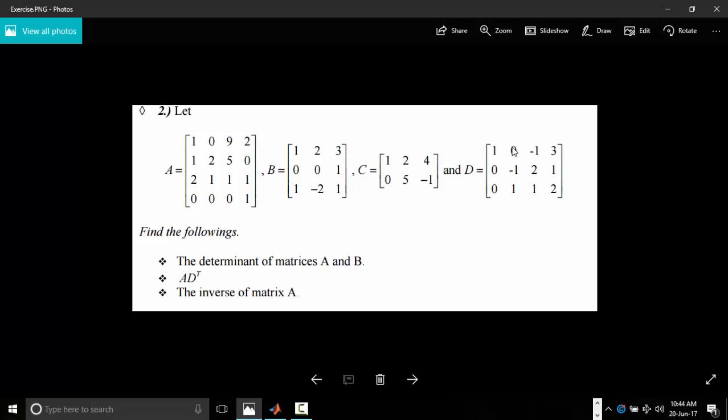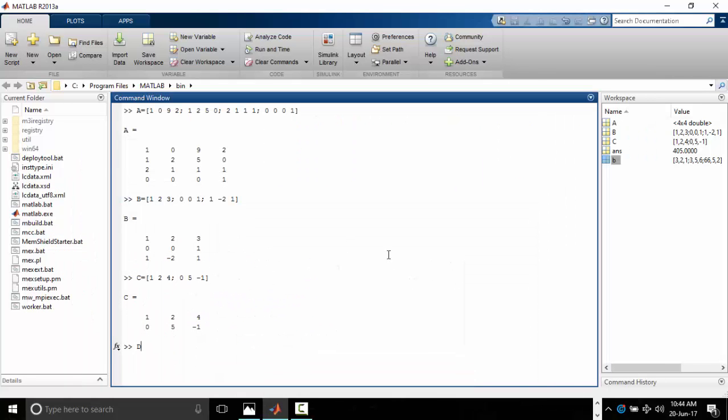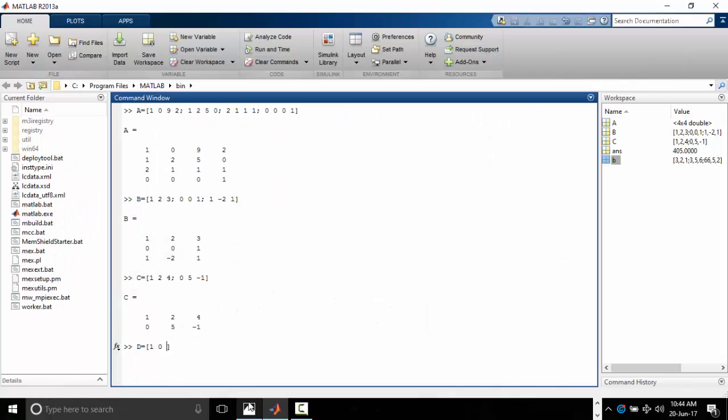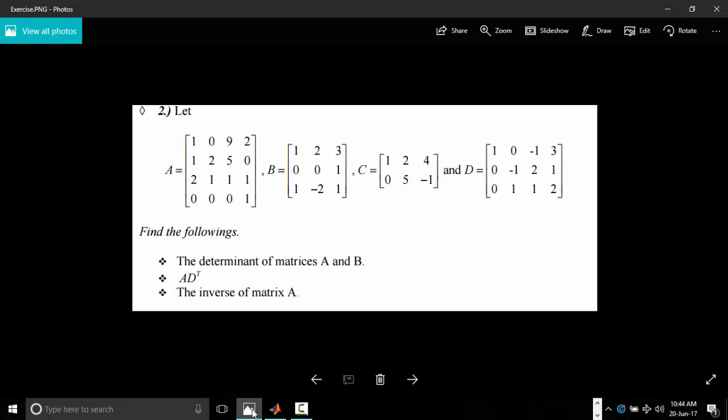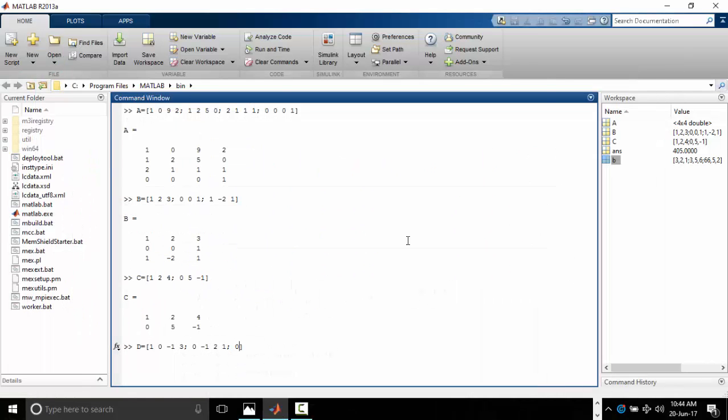Now we have d to be 1, 0, minus 1, 3. They record to 1, 0, 0, minus 1, 3, minus 1, 3, 0, minus 1, 2, 1, 0, minus 1, 2, 1, 0, 1, 1, 2, 0, 1, 1, 2. Enter.